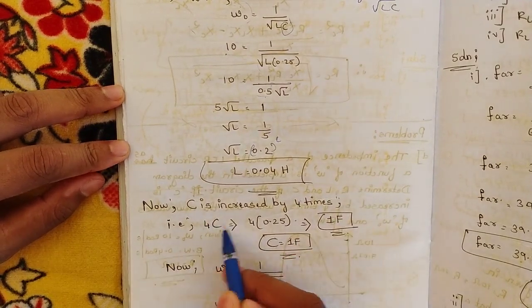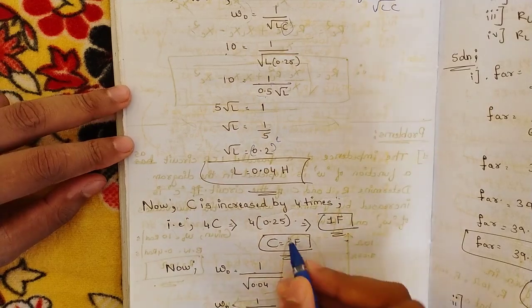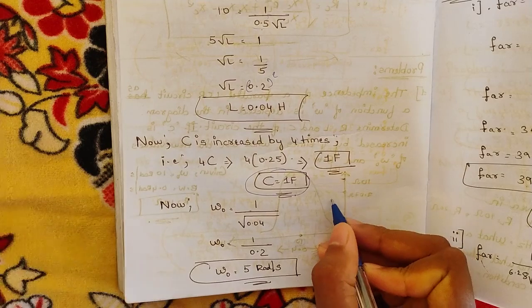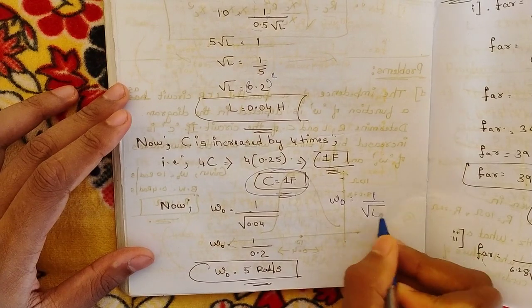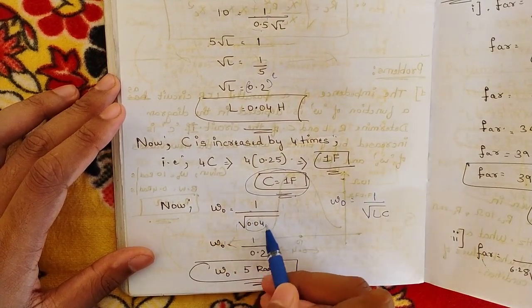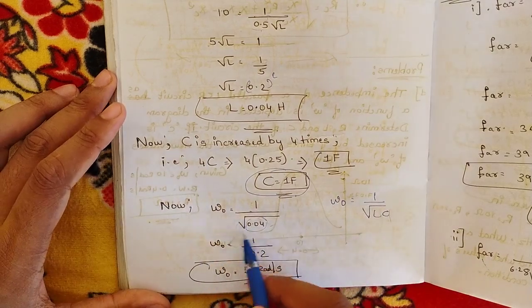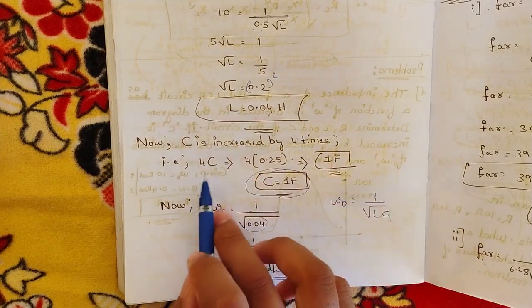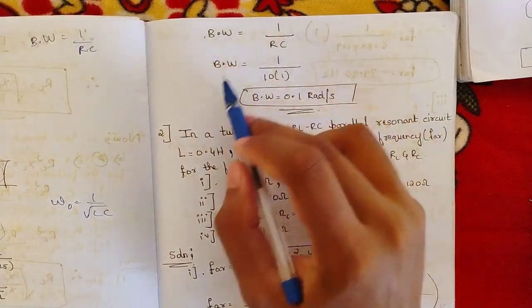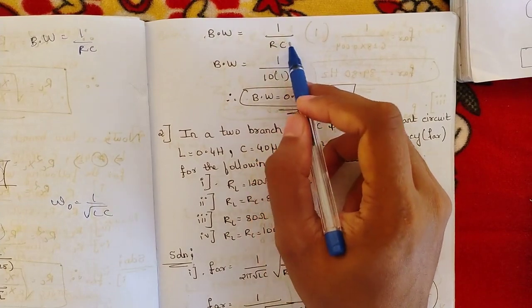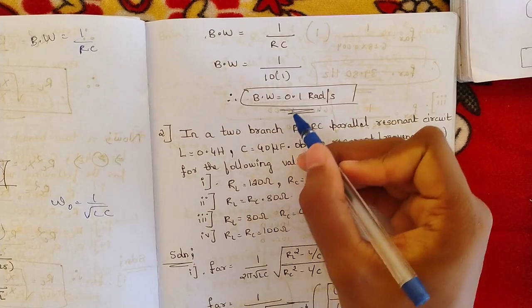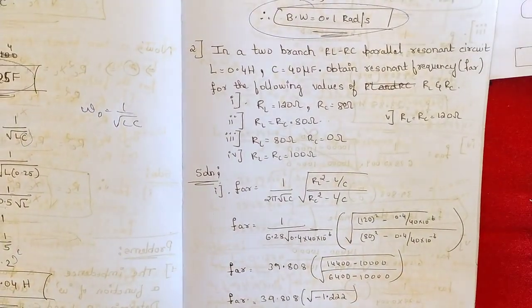Now the condition: C is increased by 4 times, so new C = 4 × 0.25 = 1 Farad. New omega naught = 1 / √(LC) = 1 / √(0.04 × 1) = 1 / √0.04 = 1 / 0.2 = 5 radian per second. New bandwidth = 1 / RC = 1 / (10 × 1) = 0.1 radian per second. So the new resonating frequency is 5 rad/s and new bandwidth is 0.1 rad/s.